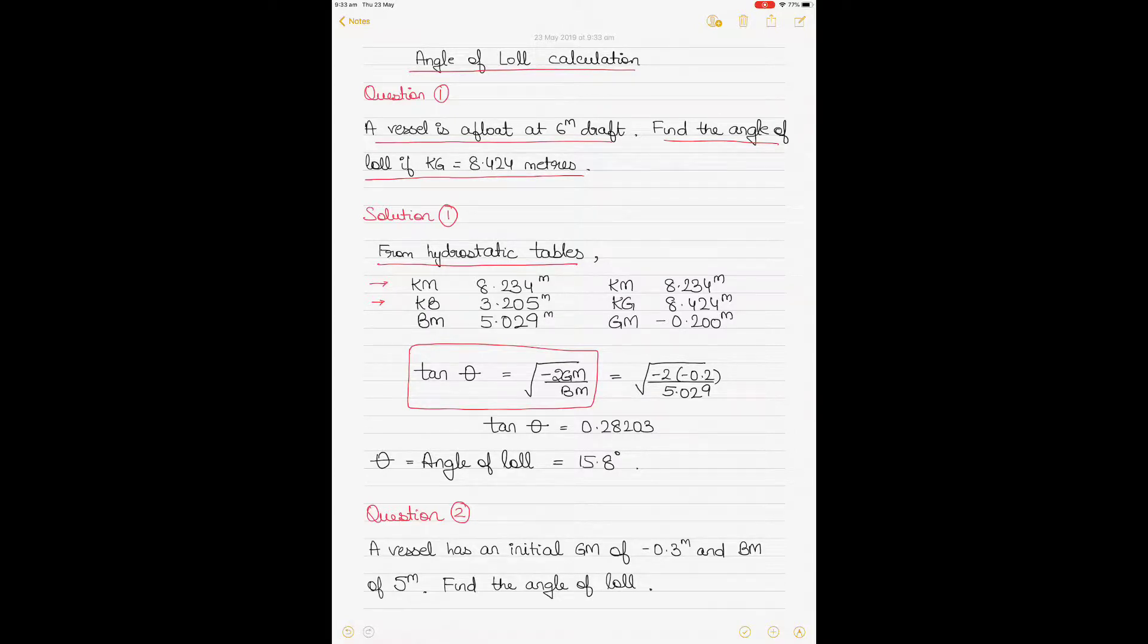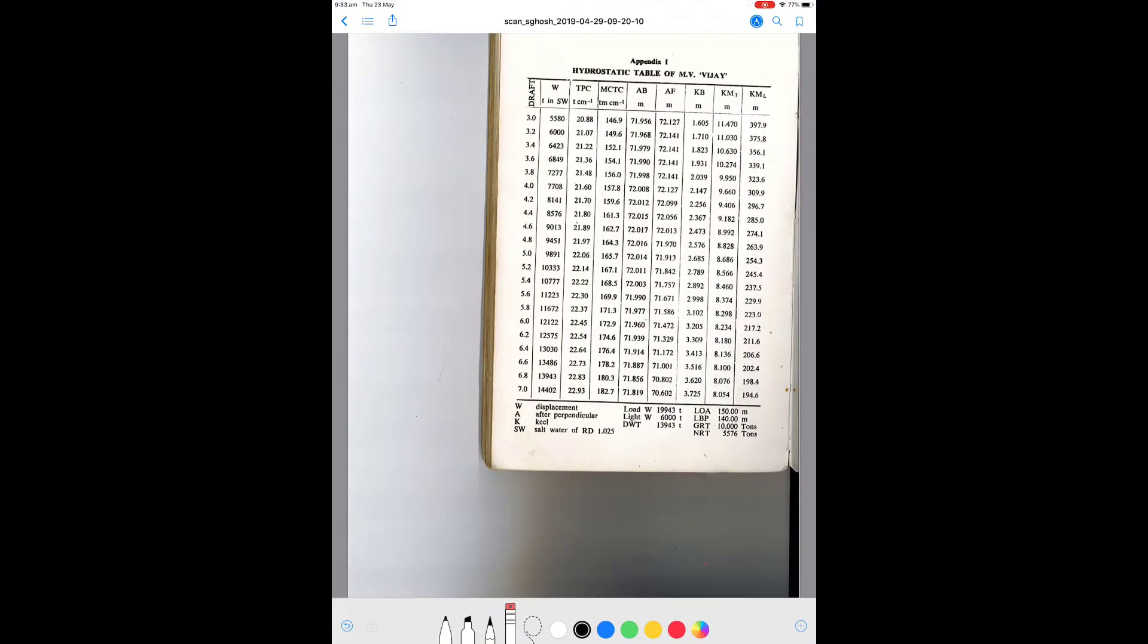We will go into the hydrostatic tables and enter the tables with a draft of 6 meters, which is given in the question. So if I go into the hydrostatic tables here, you can see that the draft of 6 meters is here, and for 6 meters you have the KM value here and the KB value here. So KM is 8.234 and KB is 3.205. So these are the two values we need today, and we'll go back with these values and solve the rest of the question.